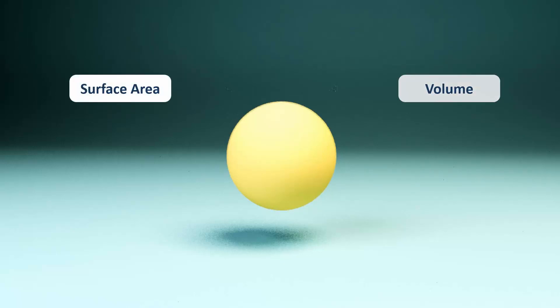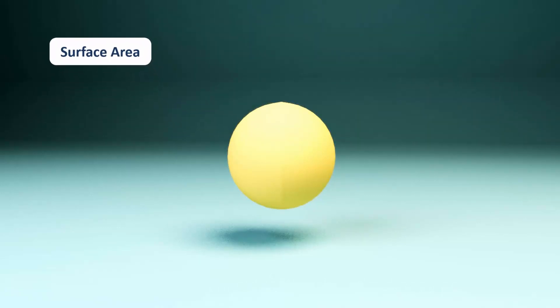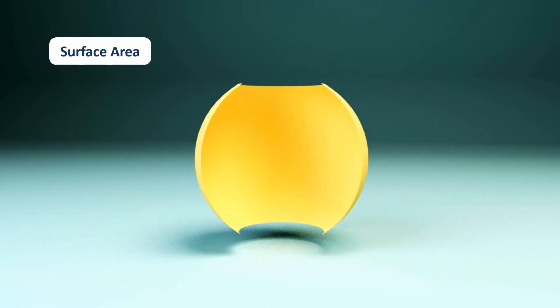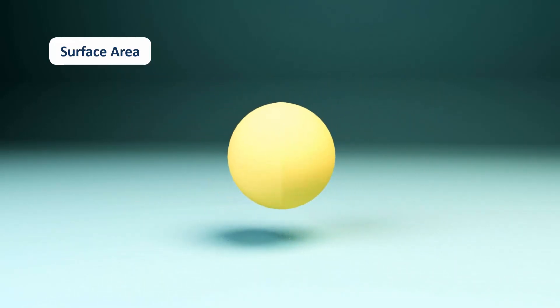Imagine for a moment that this ball has a thin layer of skin that covers it. If we were to remove this skin and spread it out, the area of this skin would be the surface area of the ball. Since surface area is a two-dimensional measure of covered area, its units are always square units.